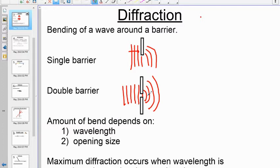And what affects the amount of diffraction? Sometimes you get a lot of bends, sometimes you get a little bit of bend. The amount of the bend depends upon the wavelength and the opening size. Important point, you get the maximum diffraction when the wavelength is about equal to the opening size.